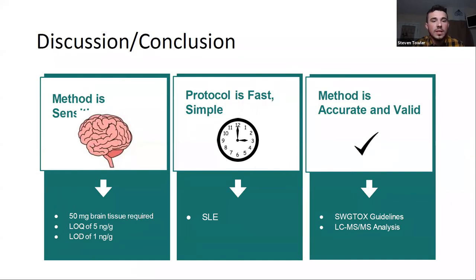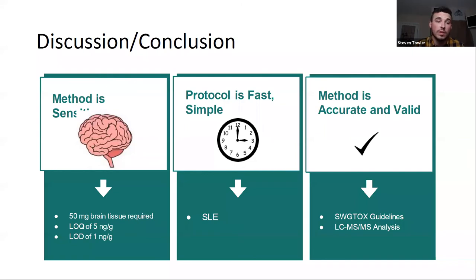Overall, our method is sensitive, requiring only 50 milligrams of brain tissue and achieving a limit of detection of 5 nanograms per gram and a limit of quantification of 1 nanogram per gram. The sample volume and sensitivities are exceptional compared to previous synthetic cathinone detection methods in brain. The protocol is fast and simple due to the use of the supported liquid extraction and simple homogenization via the bead mill homogenizer. Finally, our method is accurate as it complied with SWIG-TOX guidelines and utilized liquid chromatography tandem mass spectrometry analysis, identifying the analytes with a high degree of confidence.